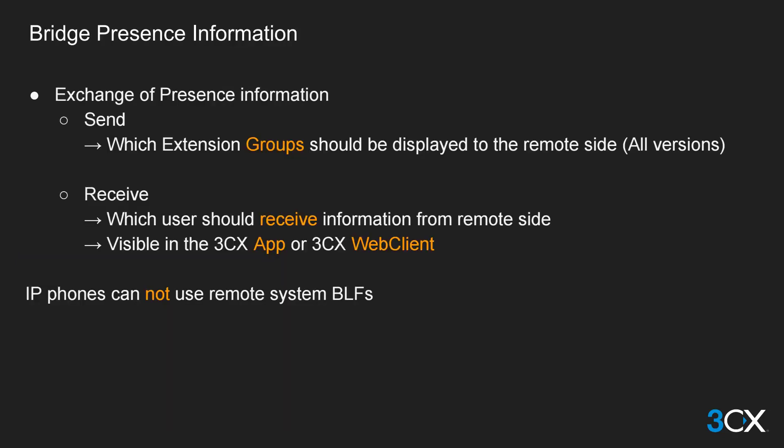When the bridge connection has been established, the presence information between the two PBXs can now be exchanged. There is the option to publish or send the presence information from the local PBX — extension group information will be sent across to the bridged PBX. The option to receive the presence information from the remote bridge PBX is also available and configurable. Here you choose which specific extensions will have the right to see the presence information for this connection from the remote PBX, not entire extension groups. Presence information for remote PBXs can only be viewed from 3CX apps and the 3CX web client.